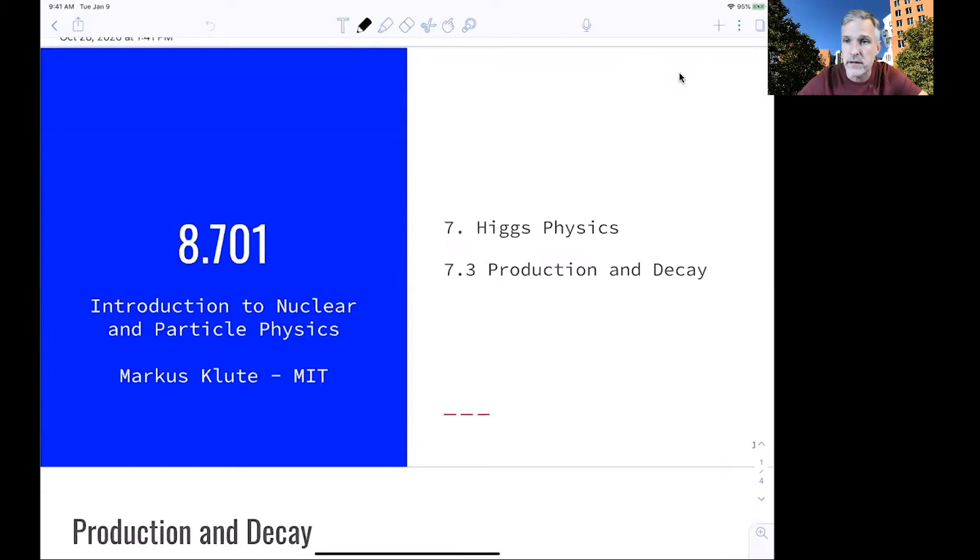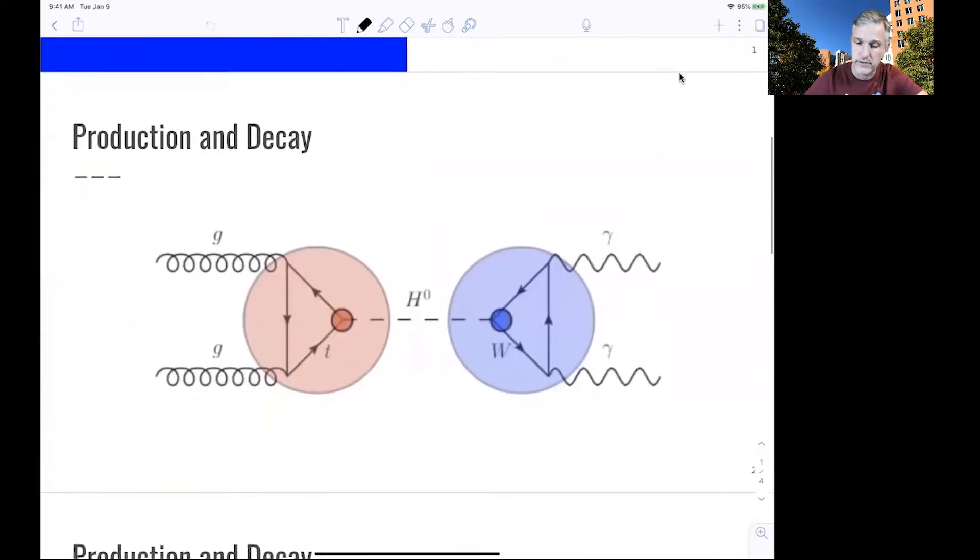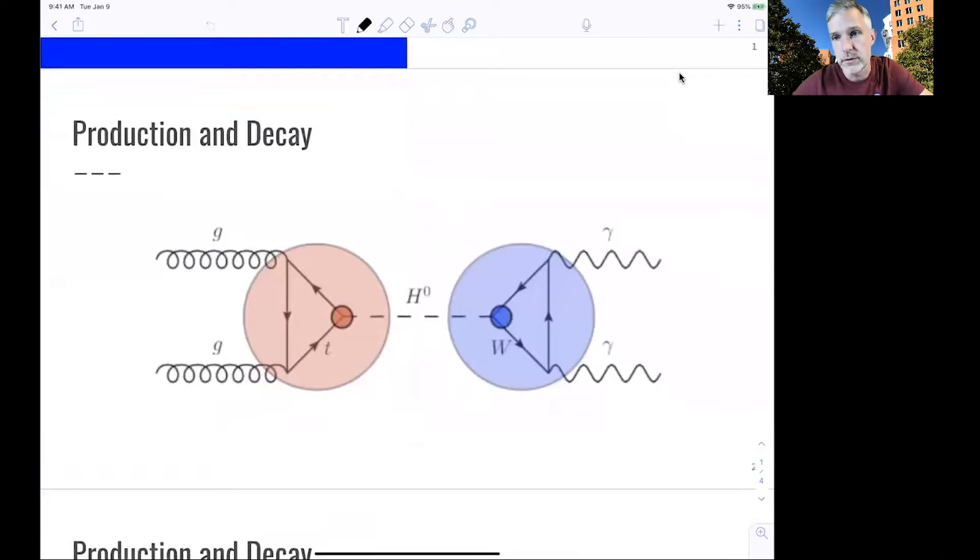We have to actually find Higgs bosons and measure their properties to see whether they are consistent with the standard model. The first question we have to ask is, how are Higgs bosons actually produced and how do they decay? This video talks about this in simple terms.